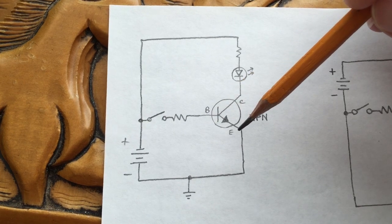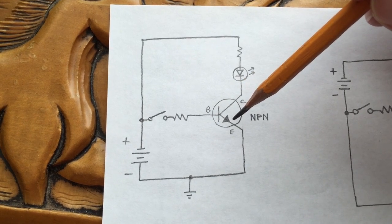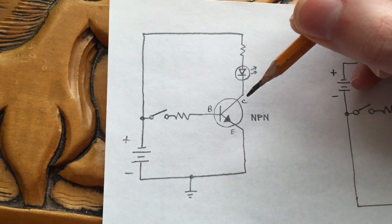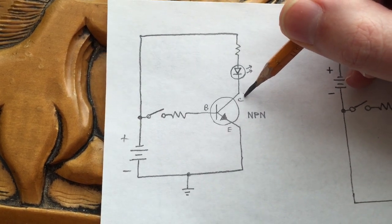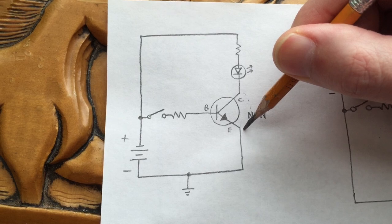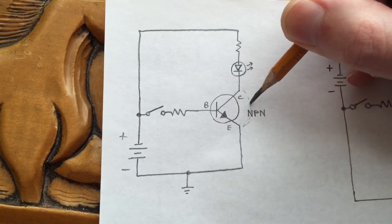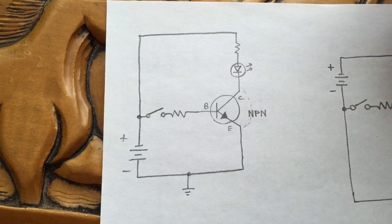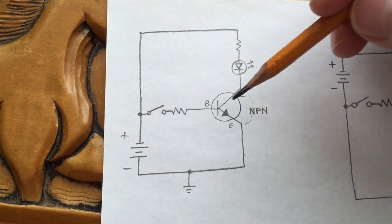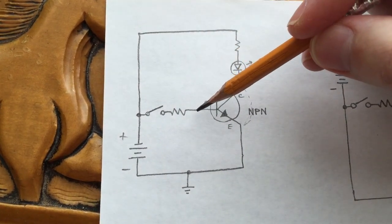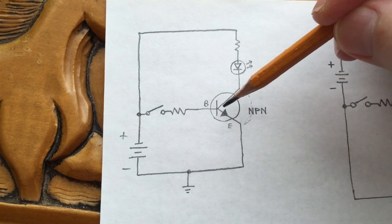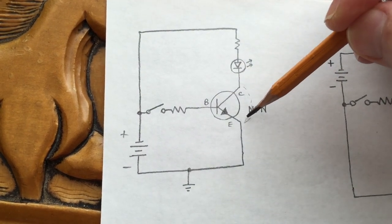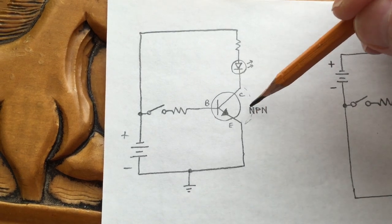When current is flowing from the base to the emitter, the transistor is turned on, and this has a switch effect. It's as if a switch closes and the collector becomes connected to the emitter, like there was a jumper wire between collector and emitter. That's what happens when the transistor is turned on. When we stop the current flow into the base, the transistor turns off, and this imaginary jumper wire between the collector and the emitter disappears, and it's an open circuit.